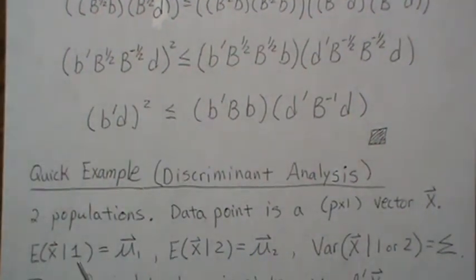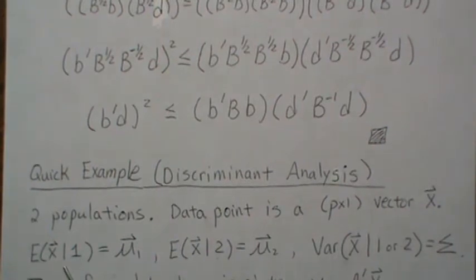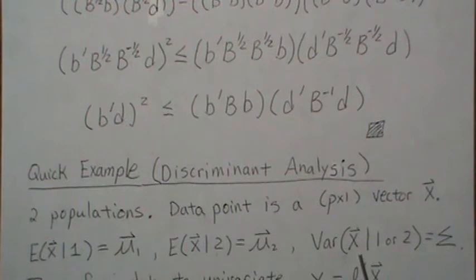So now we know that the mean of this vector, if given it's from population one, is mu one. And if it's from population two, it's mu two. And we're going to assume that they have a common covariance matrix.